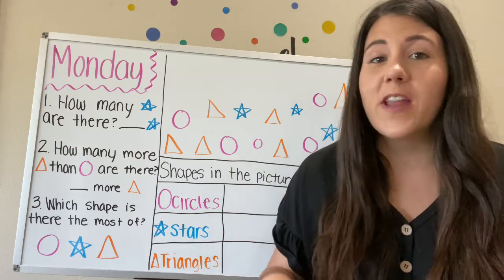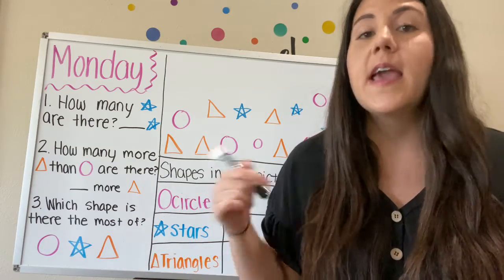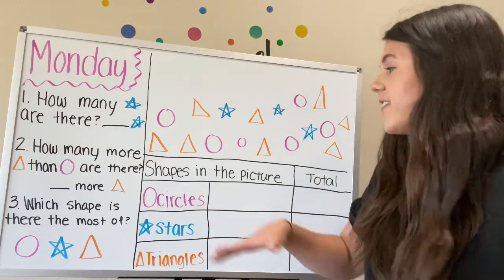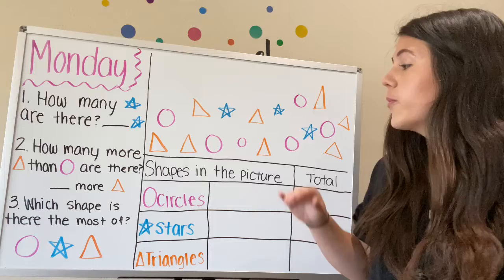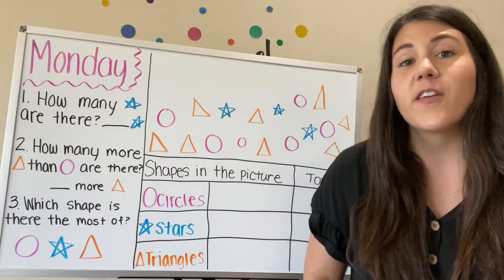Okay, today we're going to learn how to make our own tally charts. So on Friday, we learned how to read tally charts. And today we're going to make our own. So our tally chart topic is about shapes in the picture. We are going to count the shapes in the picture, and as we do that, we're going to cross them out so we can make sure that we're counting them all.